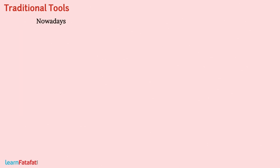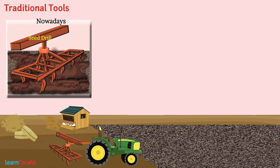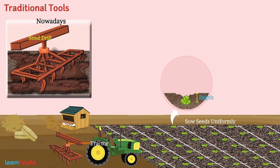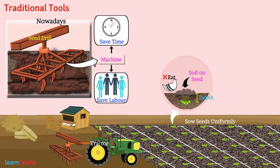Nowadays, we use a more improved tool — the seed drill — which is used for sowing with the help of a tractor. With this tool, it is possible to sow seeds uniformly at proper distance and depth. This tool also helps to place soil on the seeds so that birds cannot eat them. Because of machines used for sowing, a lot of time and labor can be saved.